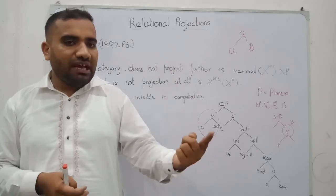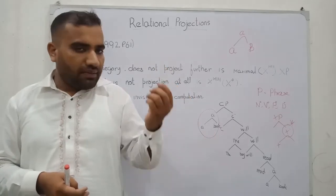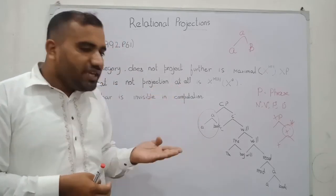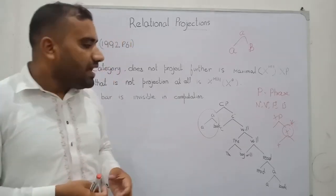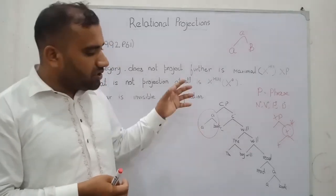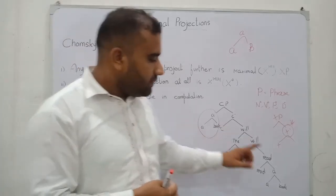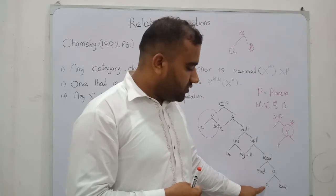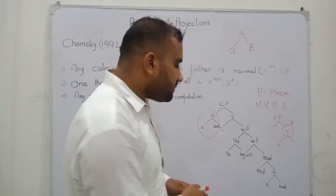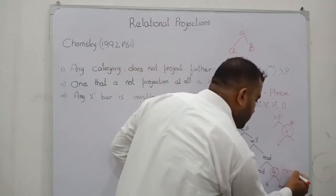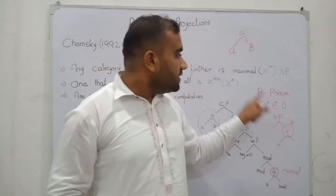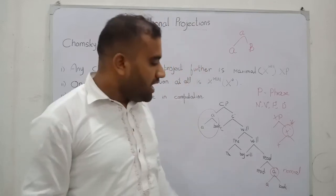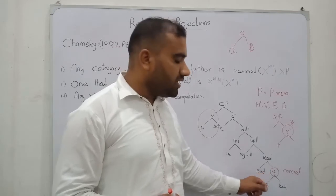This is called the inclusiveness condition. Chomsky said that we have eliminated the bar level and we have only two levels: the minimal level that cannot be projected further, and the maximal level that is the highest level. In the computation there is one level that is invisible. By applying operation merge on alpha and beta, the category merges at the canonical position, becomes the head, and becomes the maximal projection — the XP projection — because this is the result of merging alpha and beta, and this category cannot be further projected.